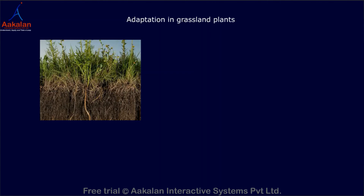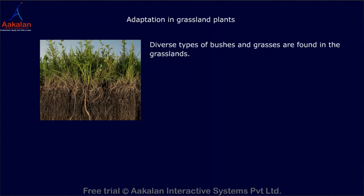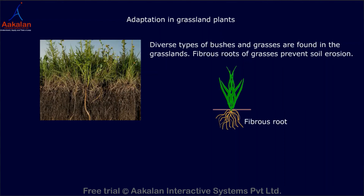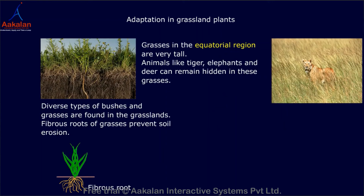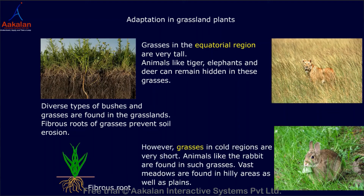Adaptation in grassland plants: Diverse types of bushes and grasses are found in grasslands. Fibrous roots of grasses prevent soil erosion. Grasses in the equatorial region are very tall — animals like tigers, elephants, and deer can remain hidden in these grasses. However, grasses in cold regions are very short, and animals like the rabbit are found in such areas. Vast meadows are found in hilly areas as well as plains.